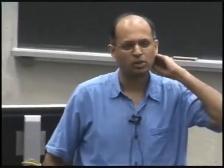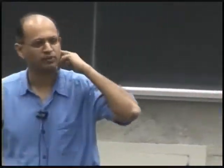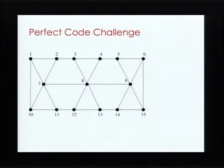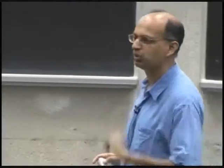The next one is actually a trick question. Find a perfect code for this graph. There isn't one — that's a trick question. Not all graphs have perfect codes. This graph does not have a perfect code.